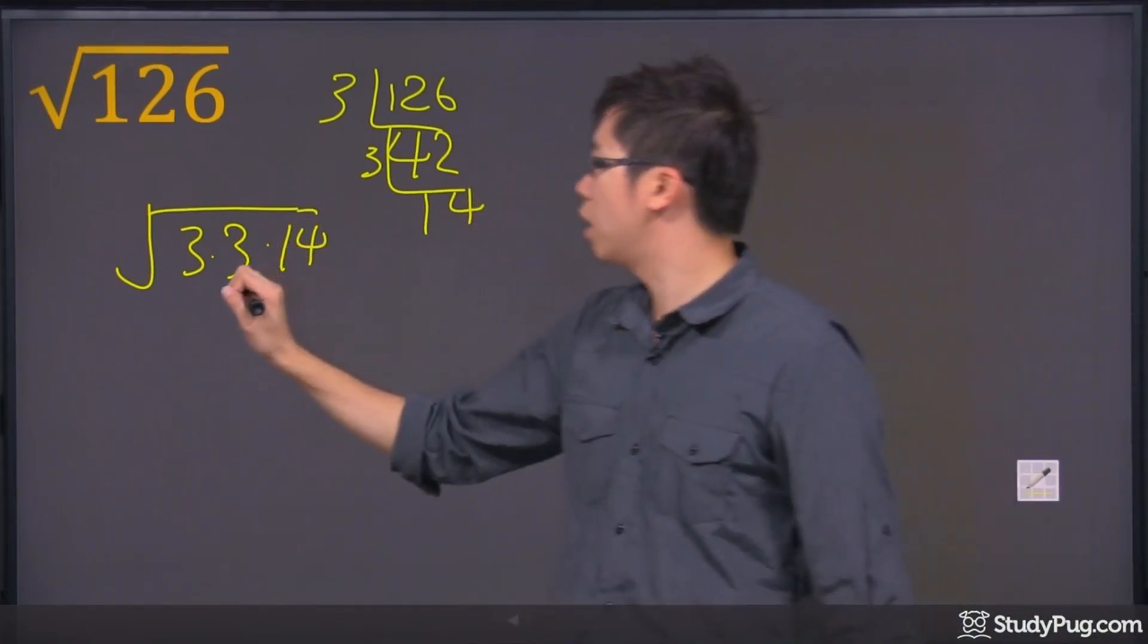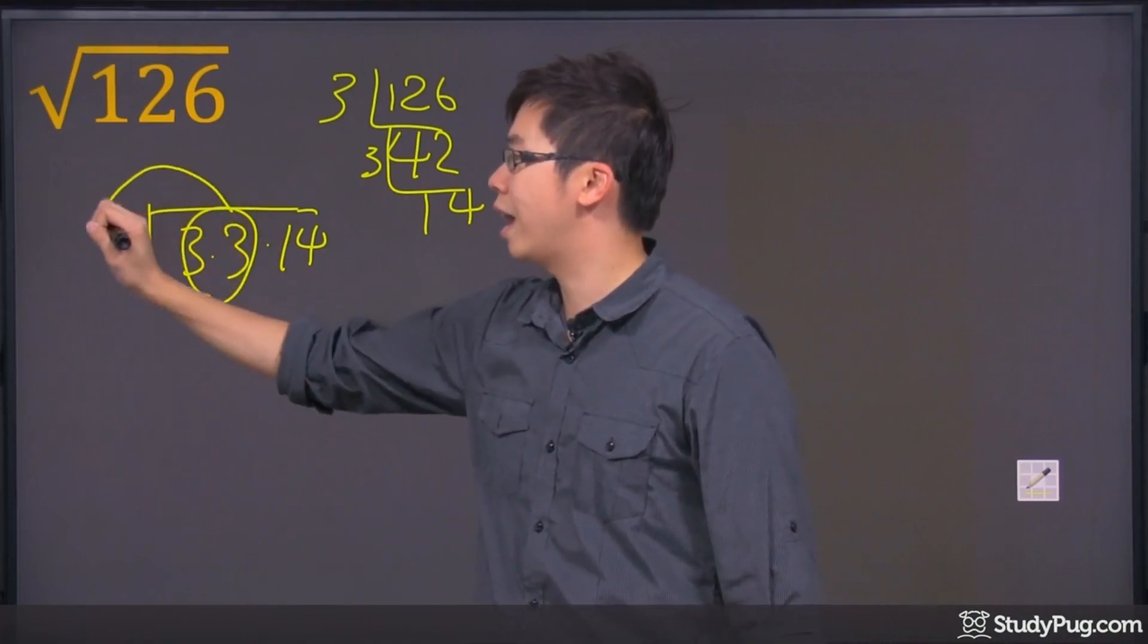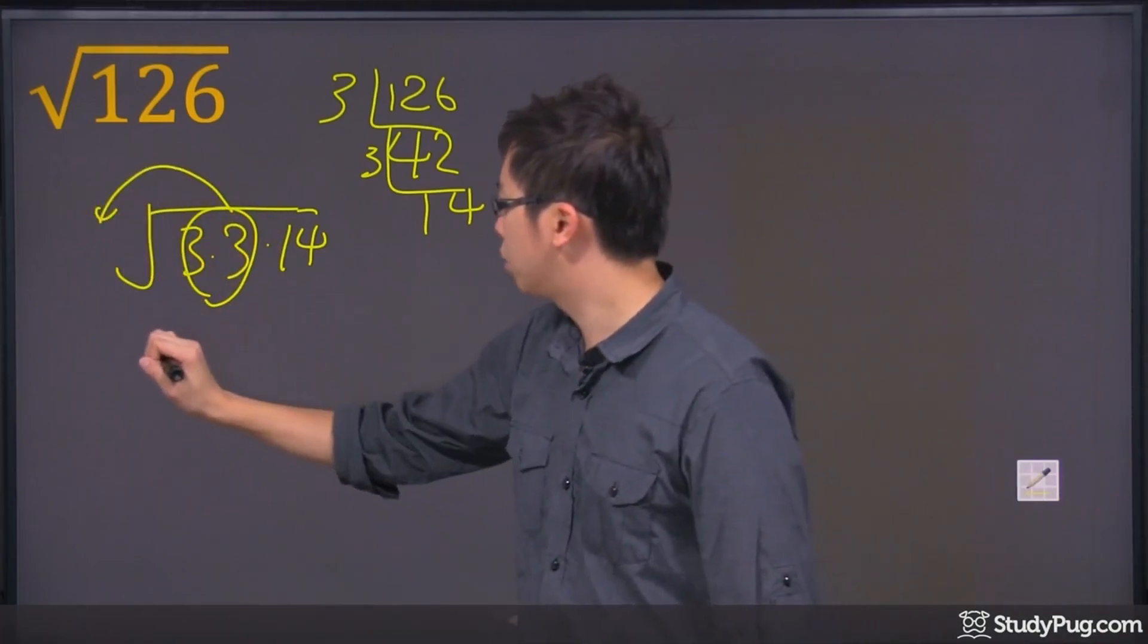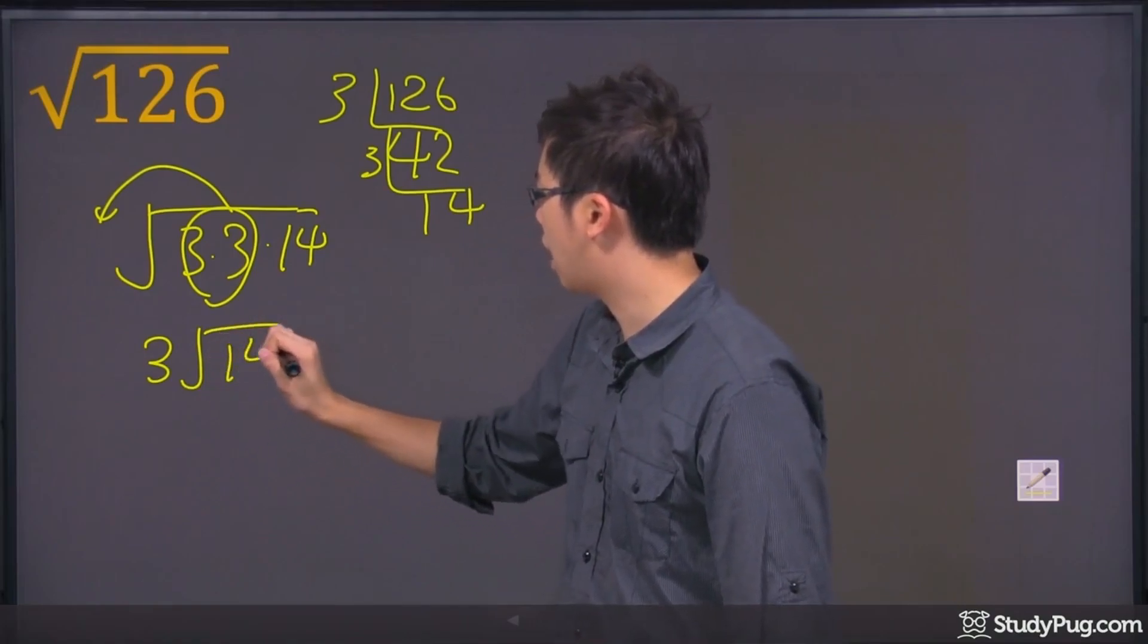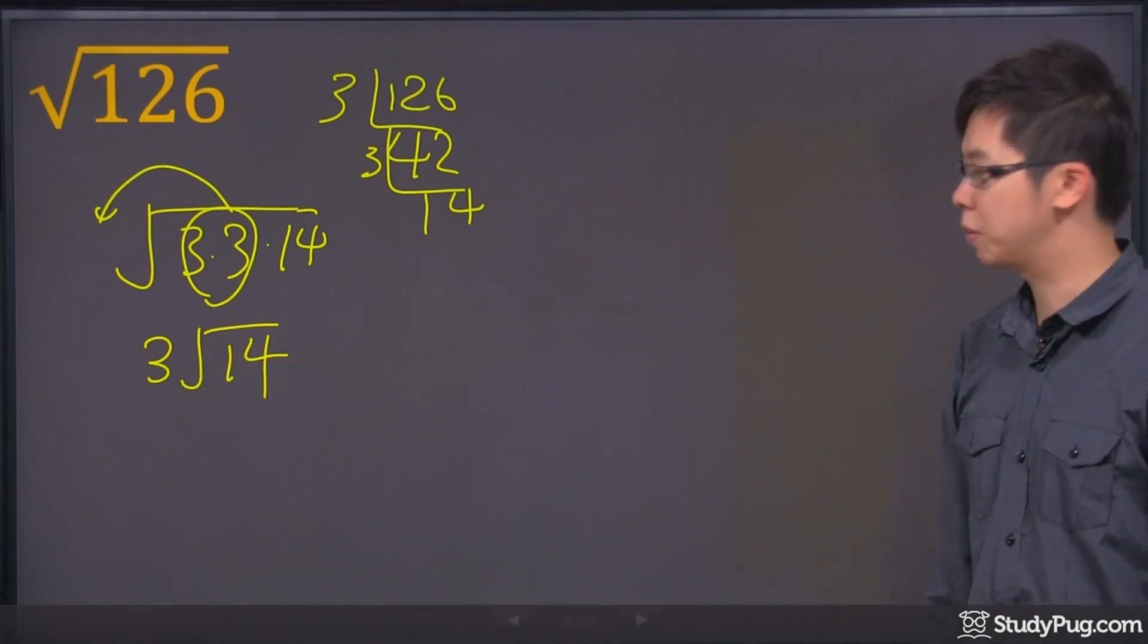So remember, you're doing square root. So for any pair that's identical, we can bring it out of the radical. So you get yourself a 3 and root 14 and that is your final answer.